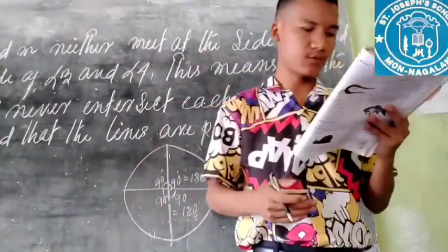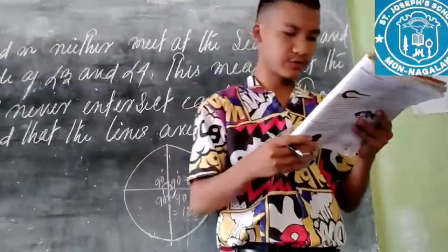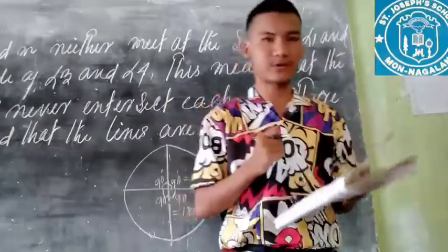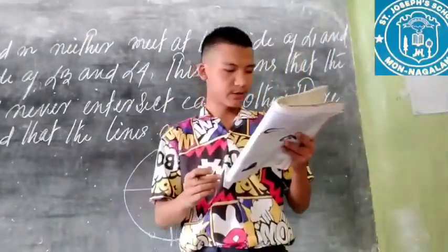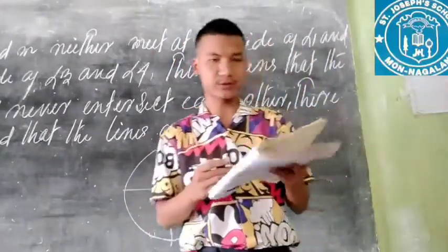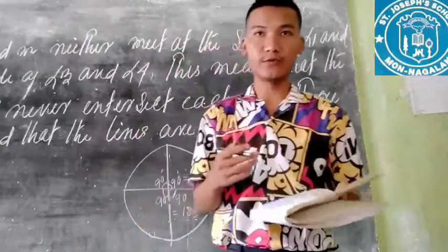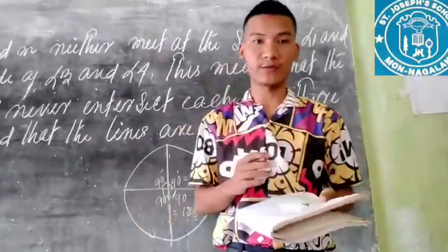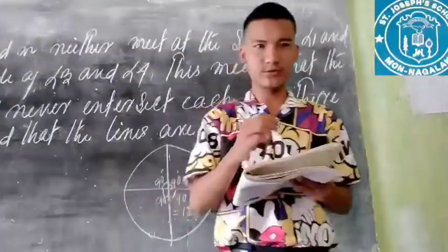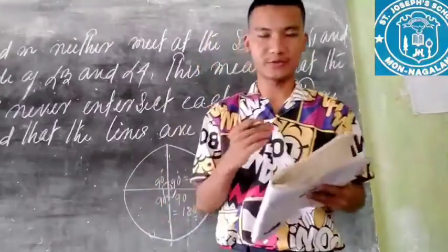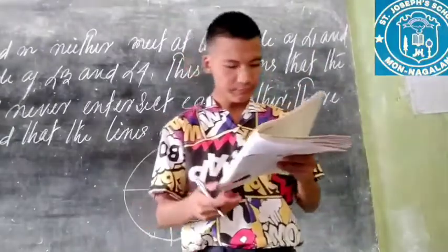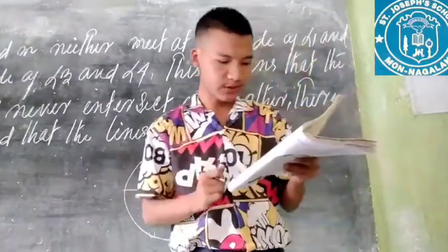Movement occurs when a part or whole of a living thing changes position from one place to another. Movement is a significant feature of living things. While writing in your notebook, you move your hand, you move your fingers, you move your eyes, you blink your eyes — that is also a movement. And while I am talking, I am moving my lips. These are all movements.